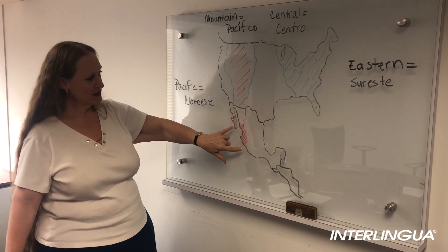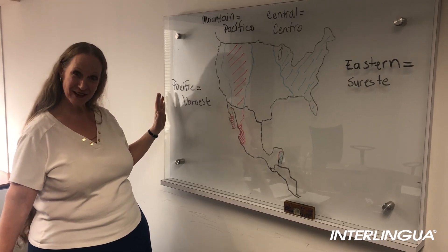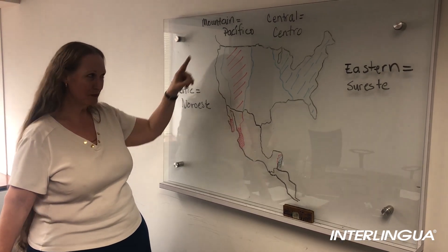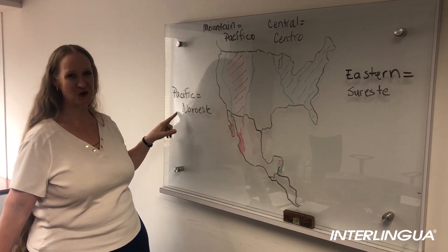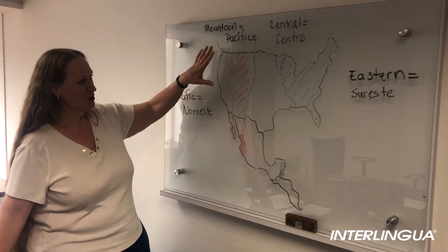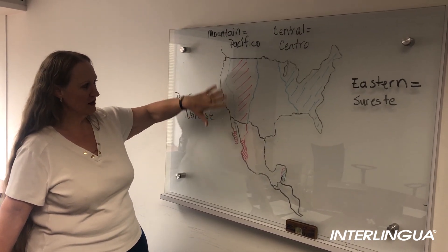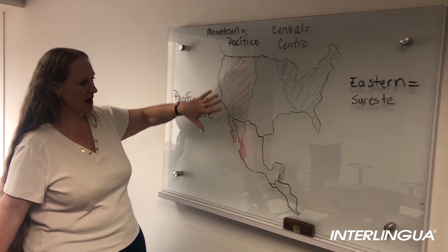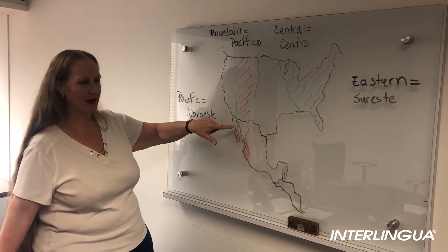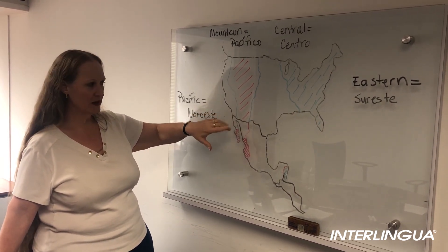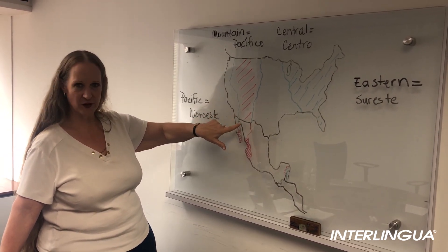And the last time zone we have in English is Pacific, and it's actually Noroeste. Which is in the U.S. the coast of California, Oregon. And in Mexico, Baja California Norte and all of this section over here.